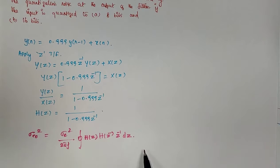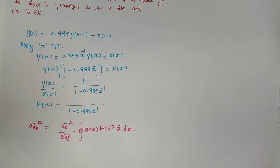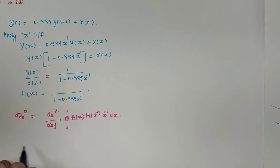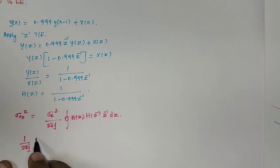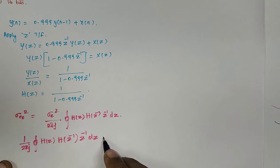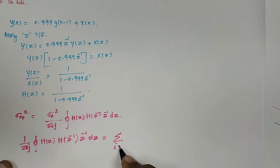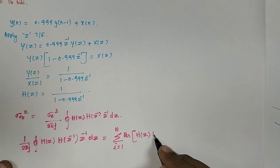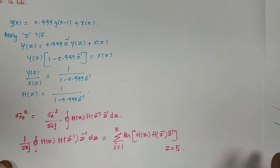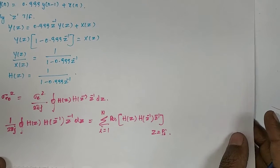To evaluate this closed integral we use the residue theorem. By the residue theorem, (1/2πj) ∮ H(z)·H(z⁻¹)·z⁻¹ dz equals the sum of residues of H(z)·H(z⁻¹)·z⁻¹ evaluated at the poles inside the unit circle, summed for i = 1 to N poles.